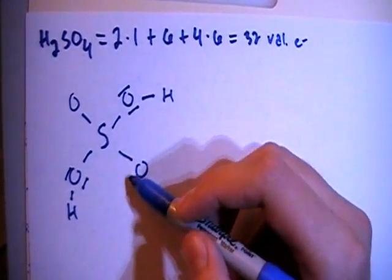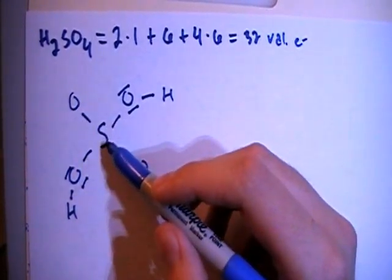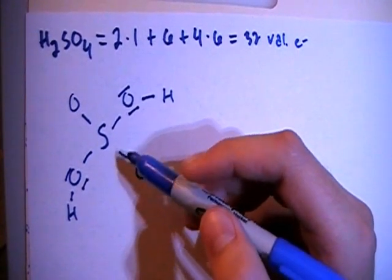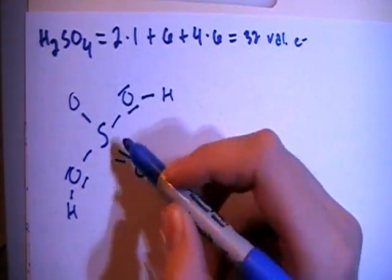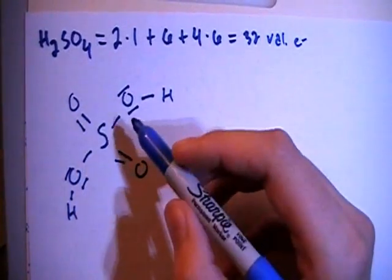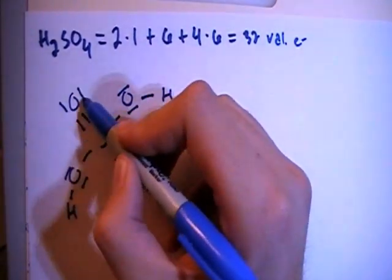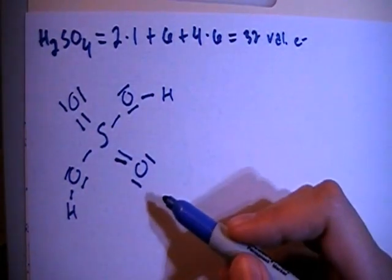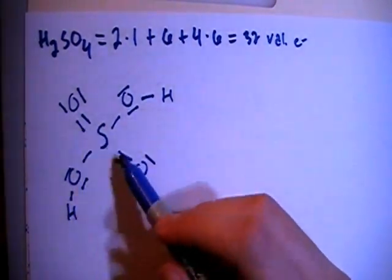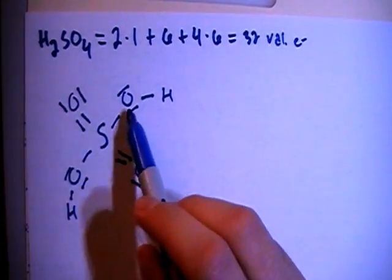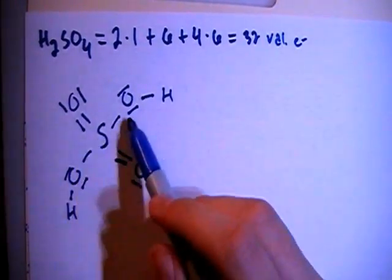And at first you might just want to fill in the octet and be done, but remember that sulfur can actually hold more than eight electrons because it's in the third period. So what we're going to end up doing is actually double bonding these. And you'll see why when we calculate the formal charge - this is going to be the correct way to draw the structure because of the formal charge on sulfur with these double bonds. Okay, so we have two oxygens with double bonds to sulfur and two oxygens with single bonds to sulfur that also have single bonds to hydrogens.